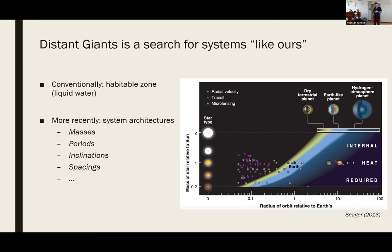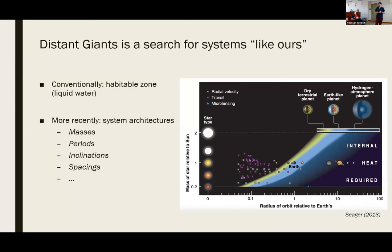To answer that, we have to back up and note that conventionally, questions of exoplanet habitability have centered around the concept of the habitable zone — basically asking whether a planet can support surface liquid water. But in recent years it's become evident that a more holistic view of an exosystem is necessary to characterize whether its constituent planets are indeed habitable. One of these key characteristics, especially for Distant Giants, is called the system's architecture, which describes the overall dynamical and orbital characteristics of all bodies in that system — things like masses, periods, period ratios, eccentricities, obliquities, and so on.